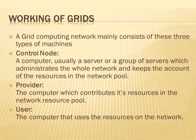A grid computing network mainly consists of three types of machines. The control node is a computer — usually a server or group of servers — which administrates the whole network and keeps account of the resources in the network. It acts as a manager, keeping track of various happenings and resources being allocated and relocated in the grid system. The provider is a computer which contributes its resources to the network for grid computing. And the user is the computer that uses the resources available on the grid network.